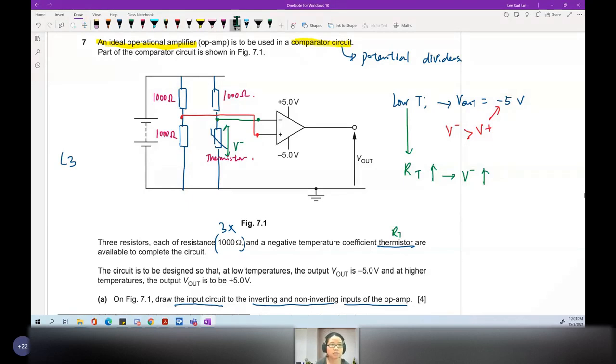If temperature is high, and you want V out to be positive 5V, the reverse will happen. This resistance will drop. If the resistance drop, V minus is less. If V minus becomes less than V plus, because V plus is fixed, then the input will flip. So this is your comparator circuit.